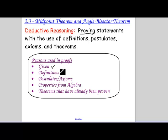Your given is your very first reason, always. Then any definitions you have, any postulates, properties and theorems. So all these different things are going to be reasons in our proofs.